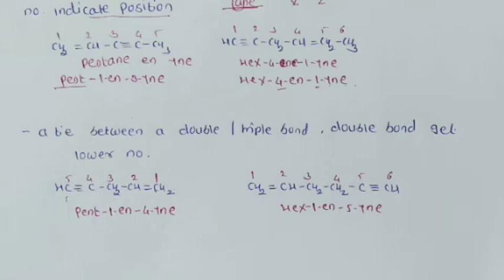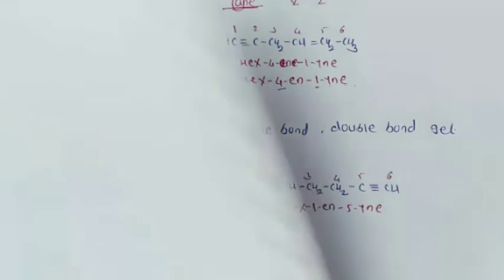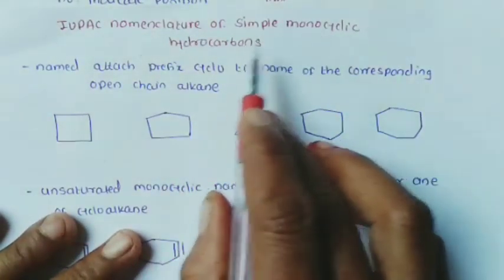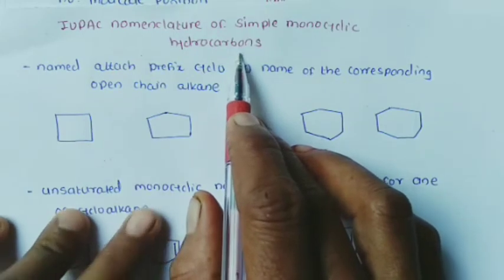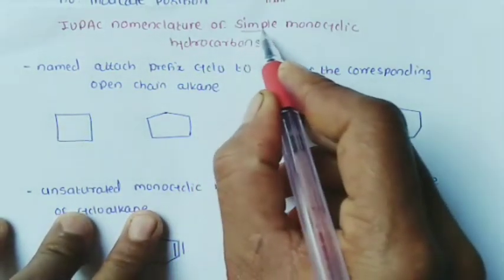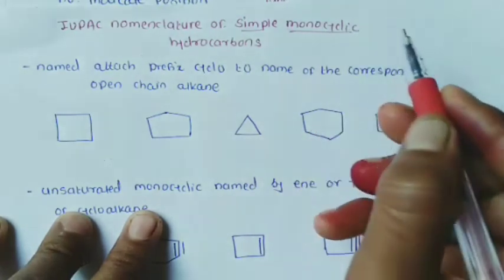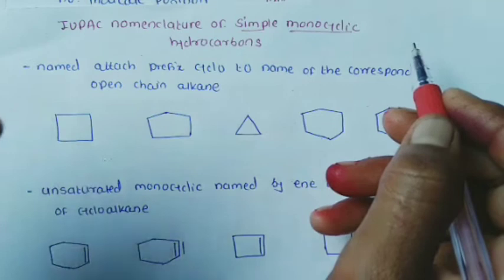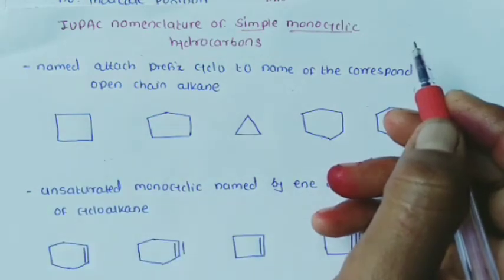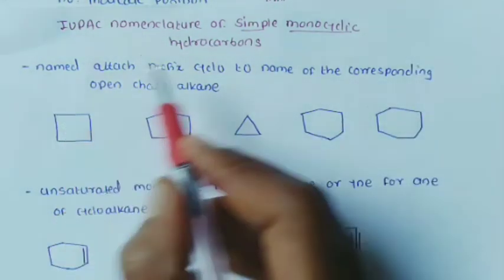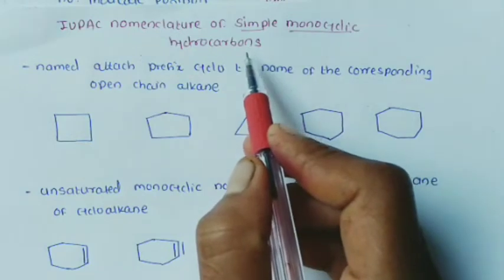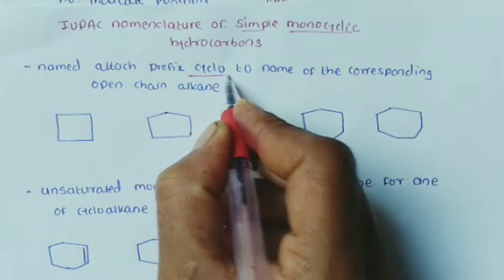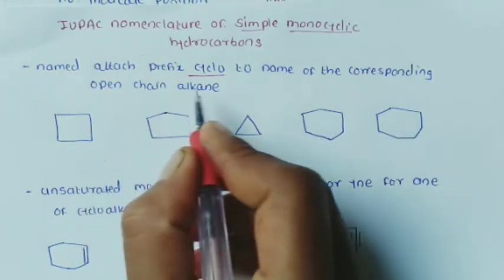The next topic is IUPAC nomenclature of simple monocyclic hydrocarbons. The first rule: simple monocyclic hydrocarbons are named by adding the prefix 'cyclo' to the name of the corresponding open-chain alkane.